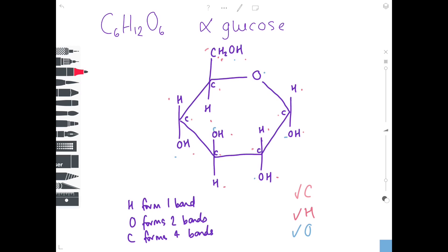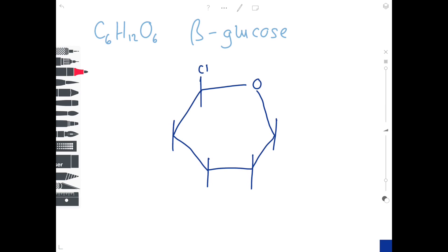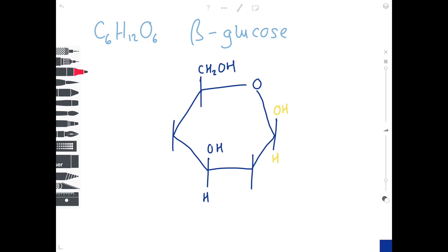Now let's look at drawing beta-glucose using the same method. Start by drawing that hexagonal ring, six-sided, with the oxygen in the right-hand corner. Draw those bonds on and add CH2OH — that's the complicated bit. The crucial thing to notice with the beta-glucose isomer is that on the right-hand side, the hydrogen and the OH groups swap places. Then it's a matter of adding hydrogens everywhere else — hydrogens go at the top — then fill in with your OHs, and finally add that hydrogen at the bottom.